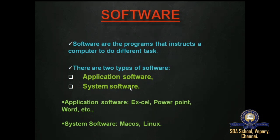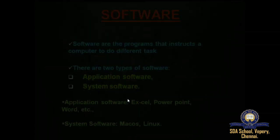Application software programs are designed for specific purposes. Some commonly used application softwares are Paint, MS Word, and Windows Media Player. System software runs the application software and controls and manages your computer.